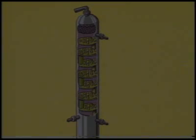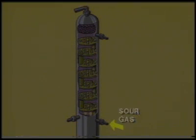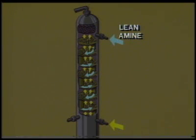Now let's follow the flow through the contactor column. Sour gas enters the bottom of the contactor, preferably at a temperature between 90 and 100 degrees Fahrenheit. While the sour gas rises through the bubble caps on each tray, lean amine enters from the top of the column and flows downward. In order to prevent hydrocarbon condensation, the temperature of the lean amine should be kept 10 degrees warmer than the sour gas temperature.